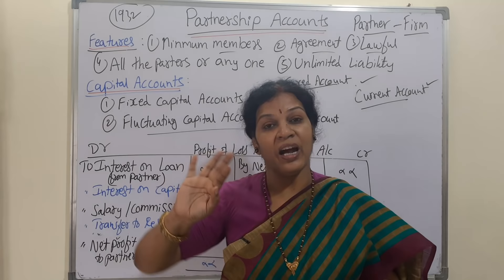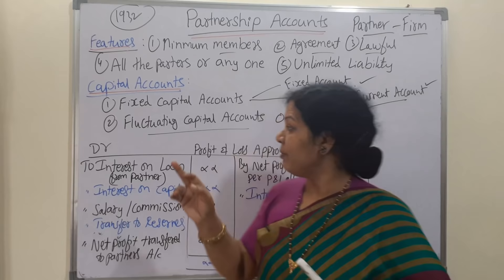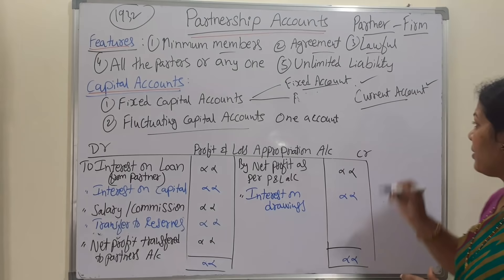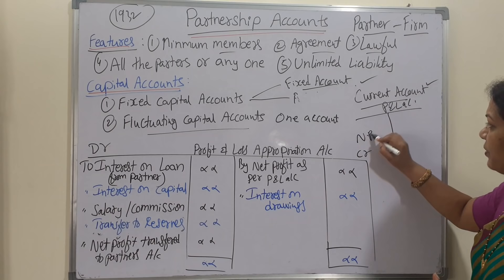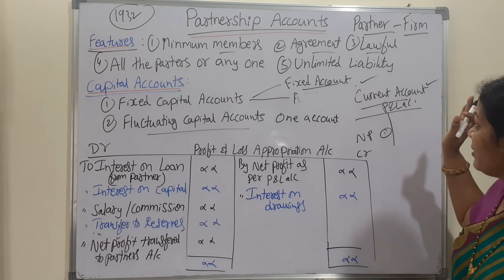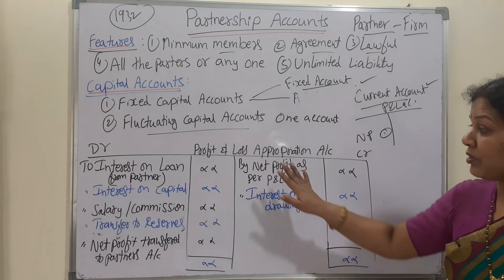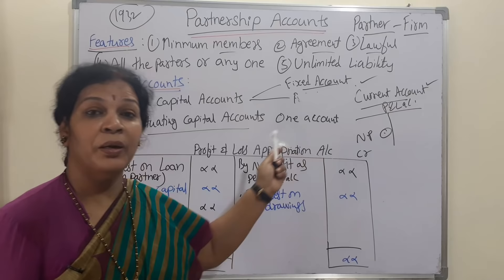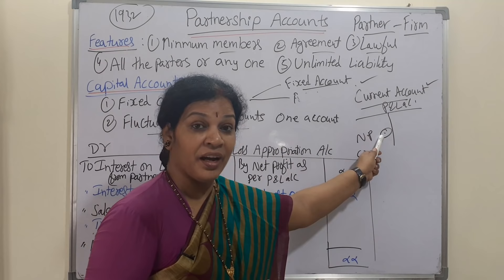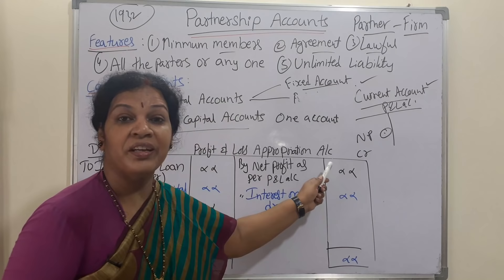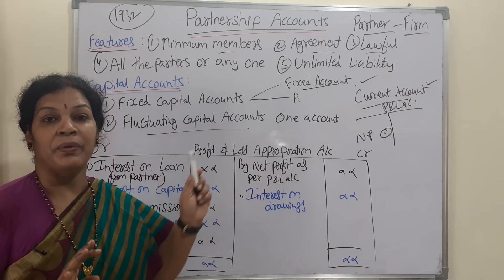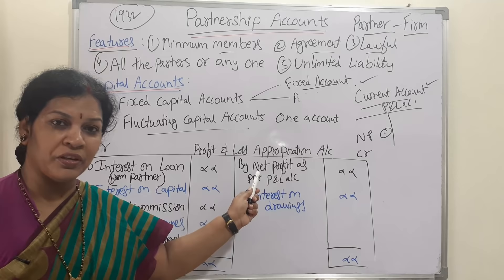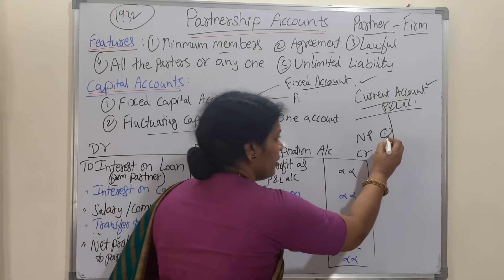After preparing the profit and loss account, we immediately prepare the Profit and Loss Appropriation Account. This is prepared only in partnership — not in any other form of accounts. We prepare it after the profit and loss account, and the net profit from the P&L account is transferred to the credit side of the appropriation account.